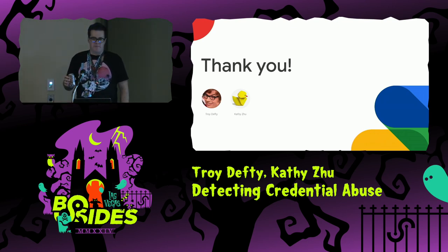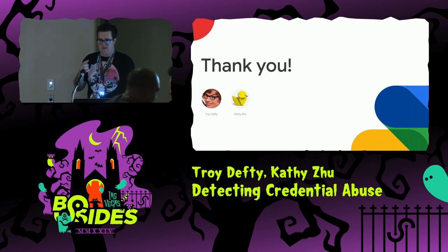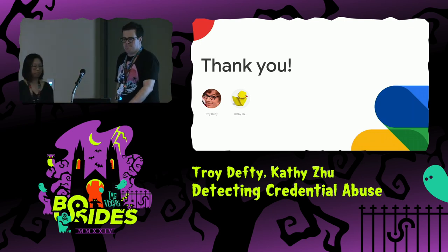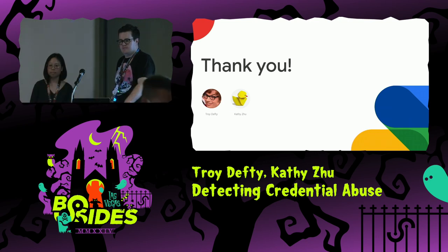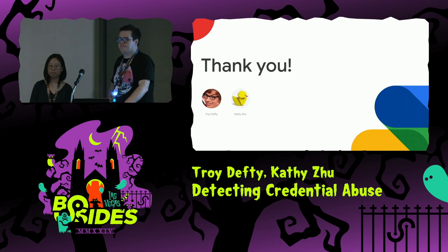Questions? Good. One question was about how to automate these detections at scale in a large enterprise. Another question: most organizations have scores of different types of authentication systems. Hardening and monitoring them all is difficult. You might be tempted to harmonize down to a single identity provider, but then everything is in one place — if that gets compromised, you're really in trouble. Any thoughts on that?